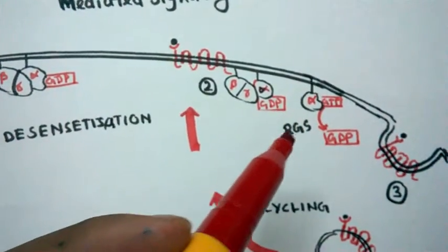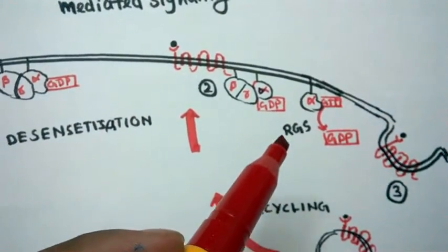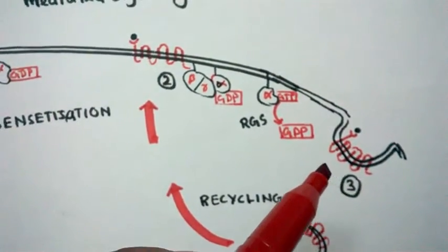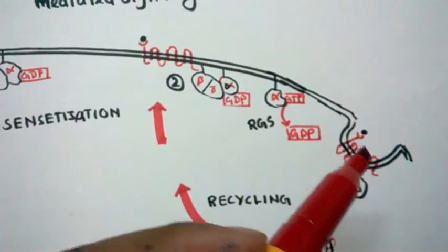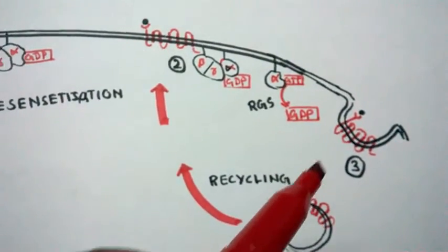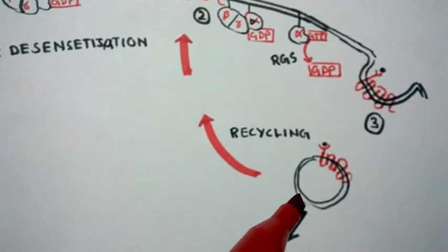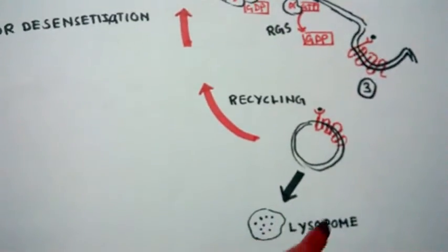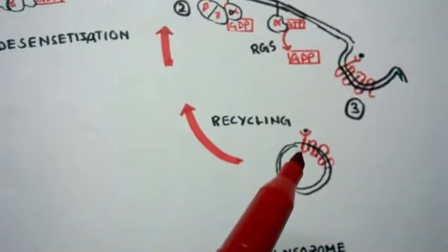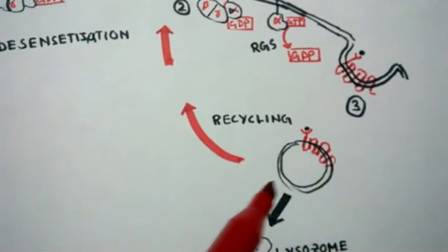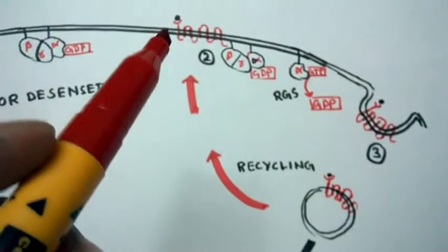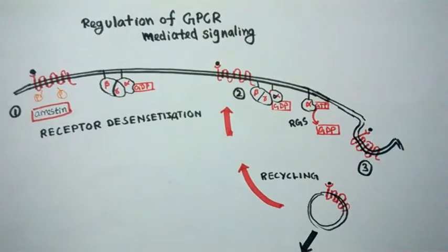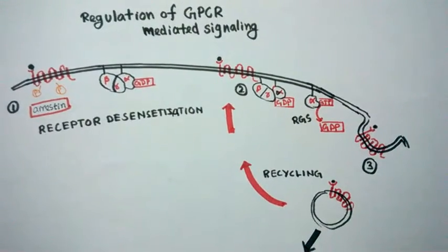In the third mechanism what happens is the receptor gets internalized, and the internalized receptor forms an endosome. This endosome can fuse to the lysosome and get degraded, or this receptor can be recycled back by an alternative mechanism. So these are the three basic mechanisms by which the GPCR signaling cascade could be regulated.